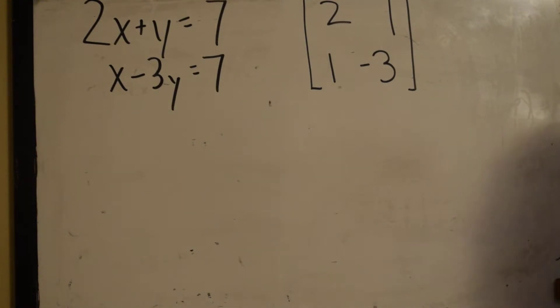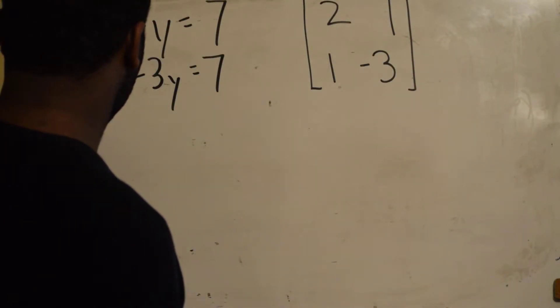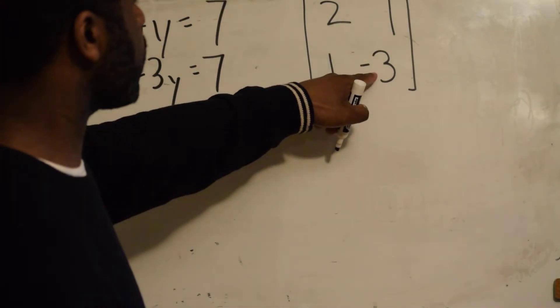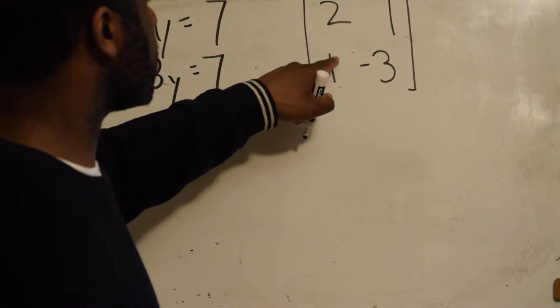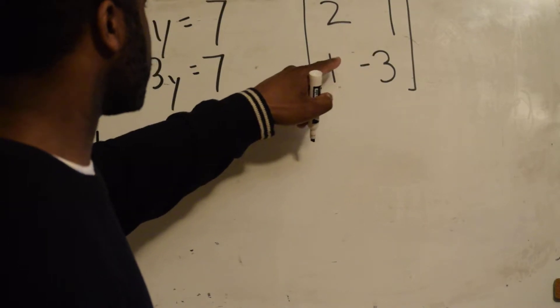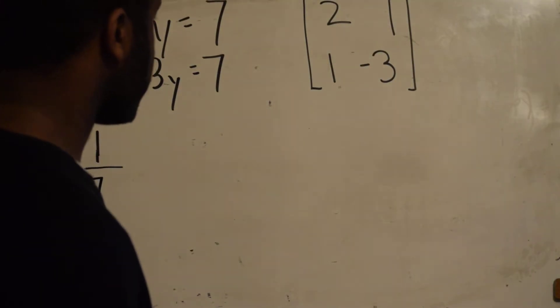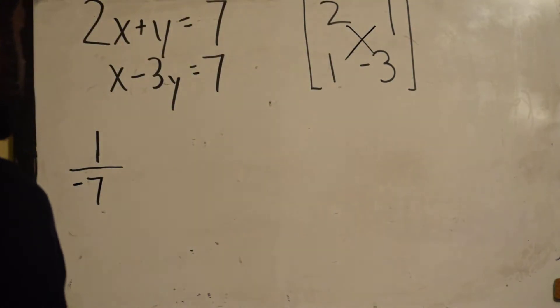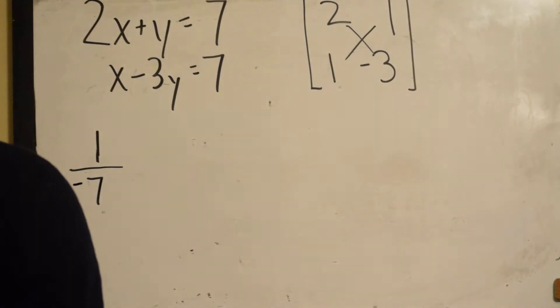Now we find the inverse. Remember how we found the inverse. That is 1 over 2 times negative 3 is negative 6 minus 1. Negative 6 minus 1 gives us negative 7. That's 1 over the determinant.